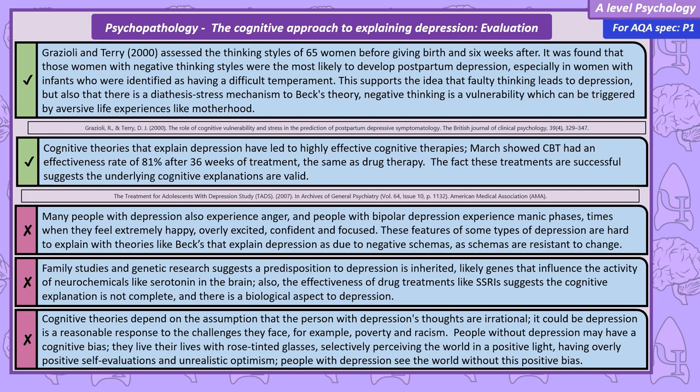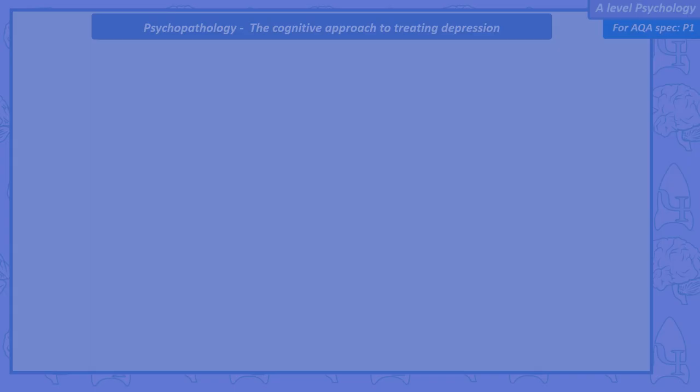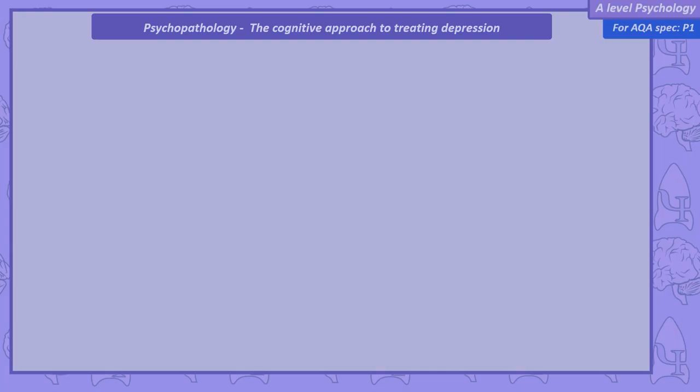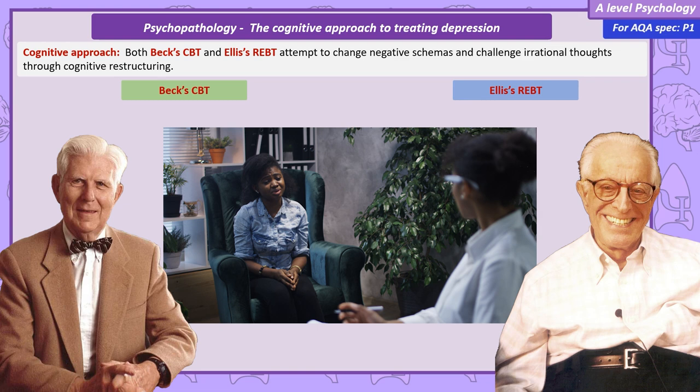The cognitive approach to treating depression. As the cognitive explanation for depression is that negative schemas lead to irrational thoughts, it makes sense that the cognitive strategy to treat depression is to change these schemas and challenge the irrational thoughts. There are two cognitive therapies: Beck's CBT and Ellis' REBT.